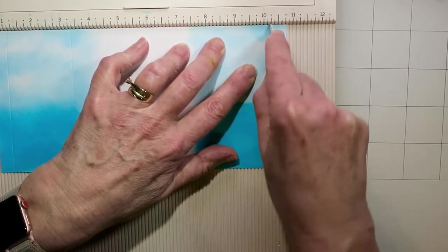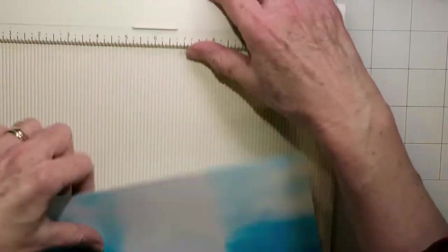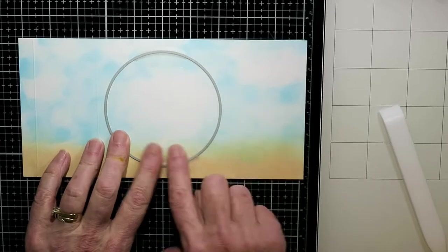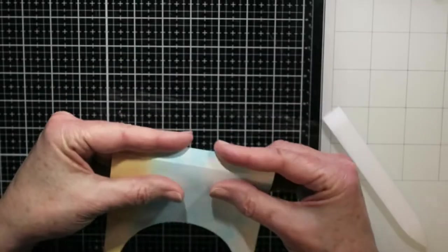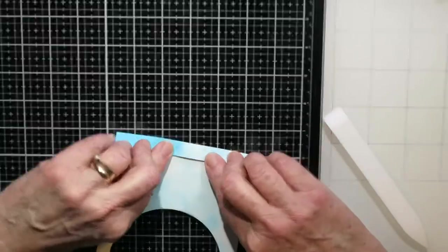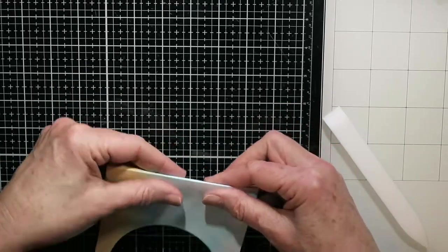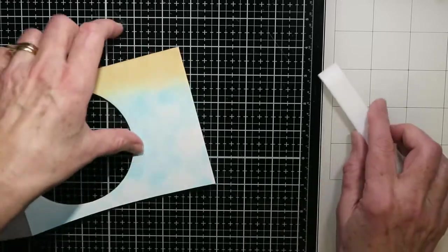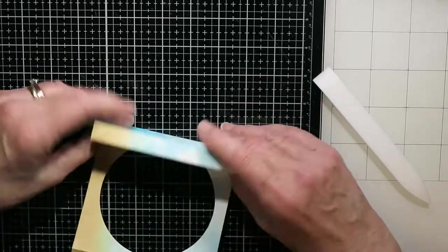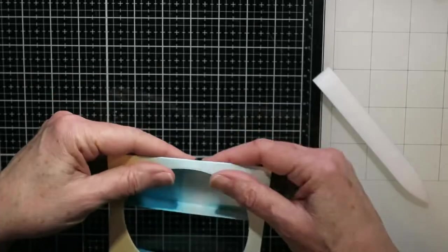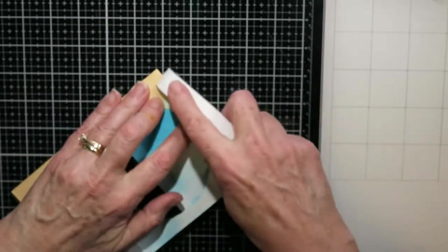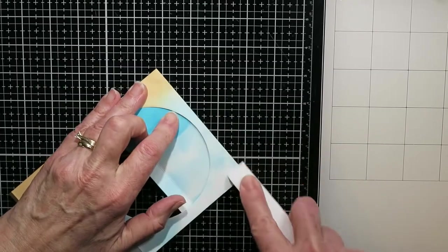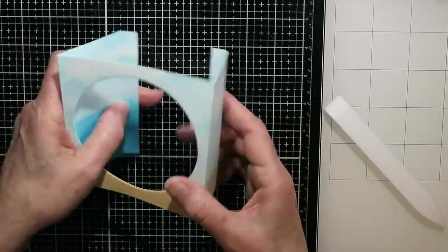Now before I bend these creases, I am going to die cut that center, and I used a circle but you can use whatever you want, whatever shape dies you want to use. And now all of these folds will be a mountain fold, so I'm just folding and creasing these now, and I tend to go both directions. I don't know if that helps or not, but it makes me happy to think that I'm not tearing my paper.